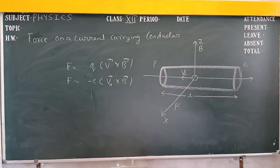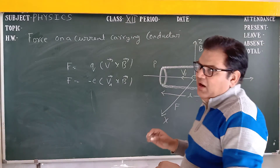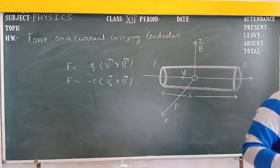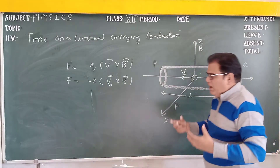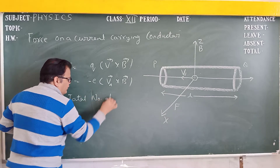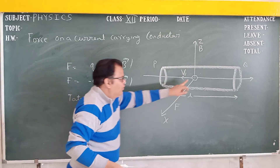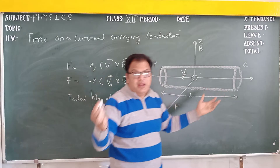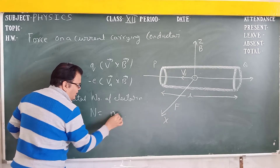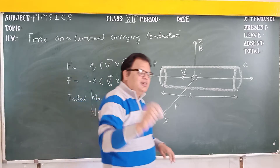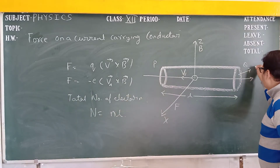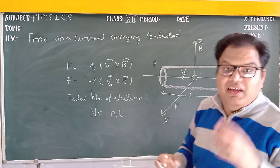Suppose the length of the conductor is L and the cross-sectional area is capital A. There are so many charge particles inside the conductor. The total number of electrons, capital N, equals the number of electrons per unit length times the length, that is N equal to n times A times L.